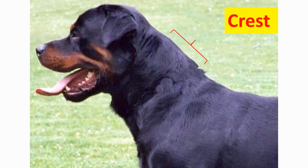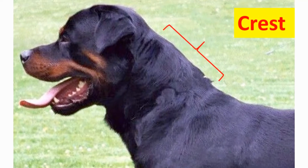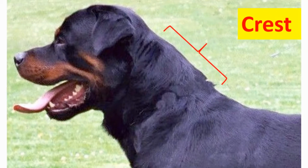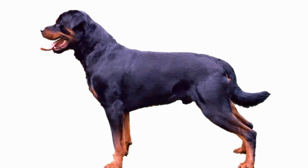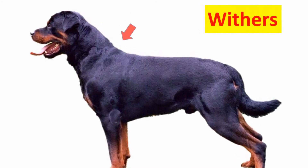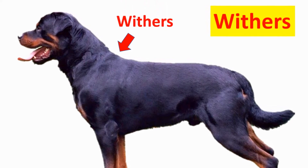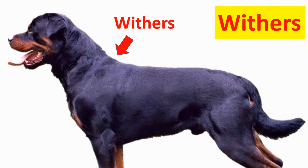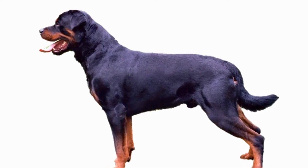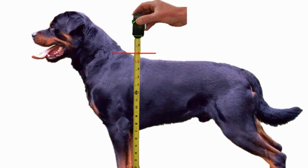Crest — the crest starts at the nape and ends at the withers. Withers — the withers is the region between the shoulder blades at the top. The withers are the top point of the shoulders and the standard place to measure an animal's height.